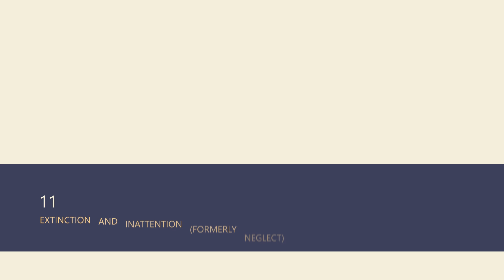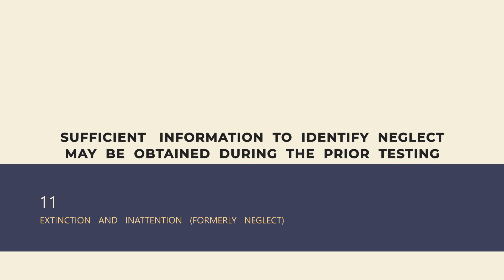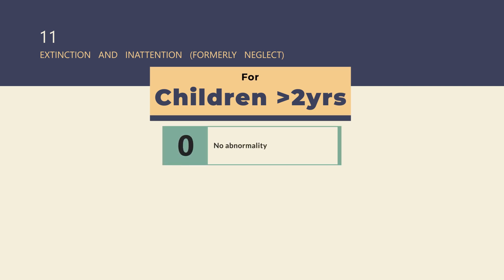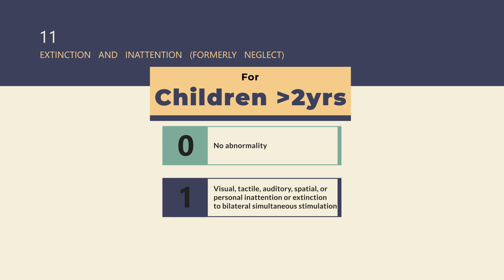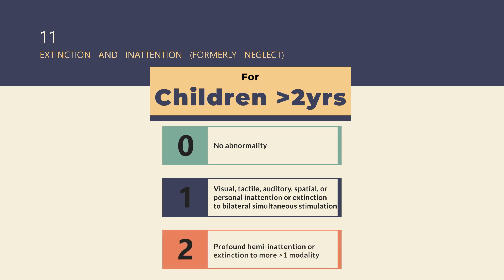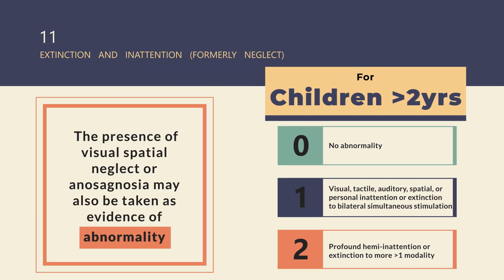The last item is item 11, Extinction and Inattention. Usually sufficient information to identify neglect can be obtained during prior testing. In children over 2 years of age, score 0 in the absence of any abnormality. Score 1 for visual, tactile, auditory, spatial, or personal inattention or extinction to bilateral simultaneous stimulation in one sensory modality. Score 2 for profound hemi-inattention or extinction to more than one modality. The presence of visual-spatial neglect or anosognosia may be taken as evidence of abnormality. Since the abnormality is scored only if present, the item is never untestable.